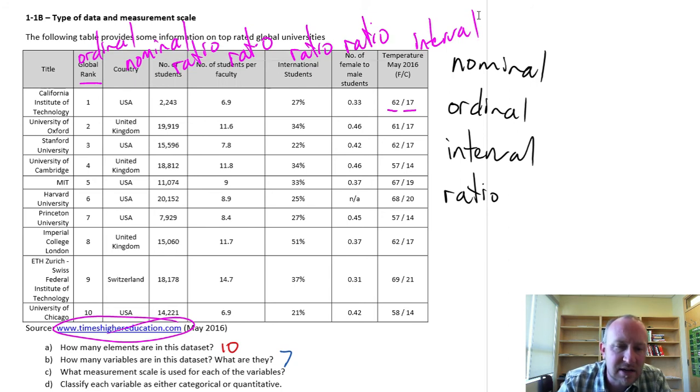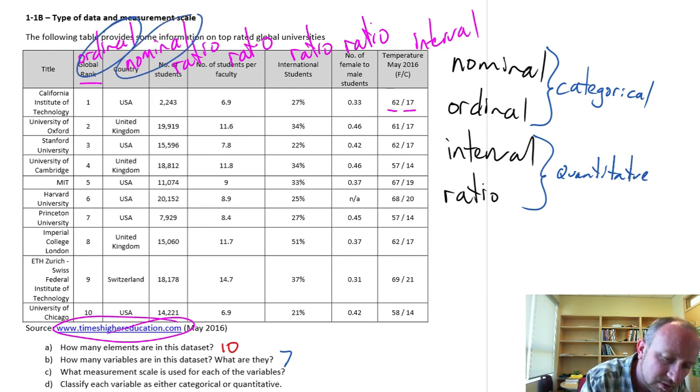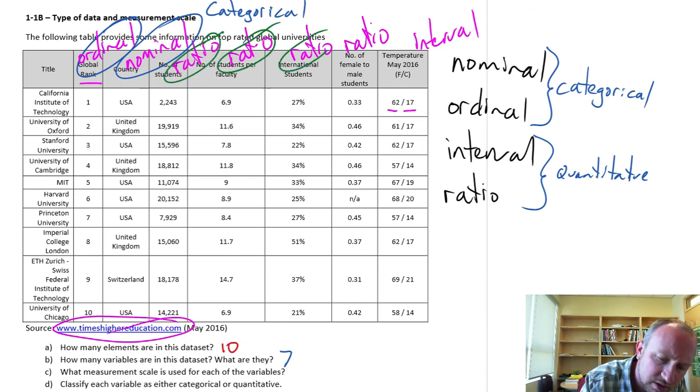Moving on to part D. So for part D, now we're looking at whether variables here are categorical or quantitative. As you may recall, any variable that is nominal or ordinal is categorical. And any variable that is interval or ratio is quantitative. So looking at our different variables, here I have ordinal and nominal. Those two are both categorical. And here I'll just change colors for our quantitative ratio. All the ratio variables and the interval. Those are all quantitative.